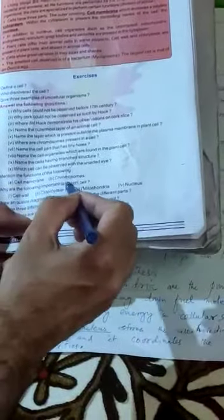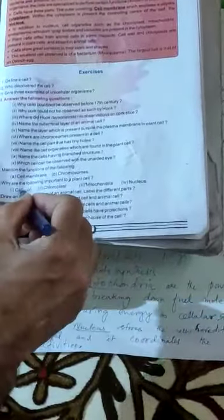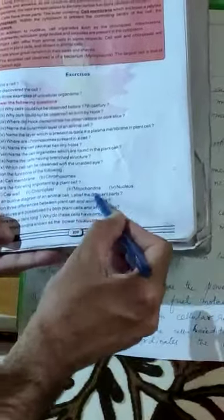Question number 6 bachow. Why are the following important to a plant cell? Cell wall, chloroplast, mitochondria, nucleus. First part - cell wall.